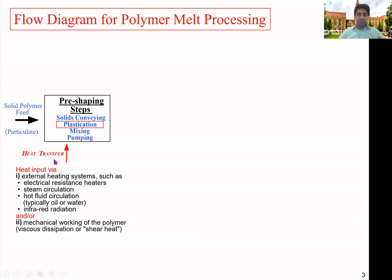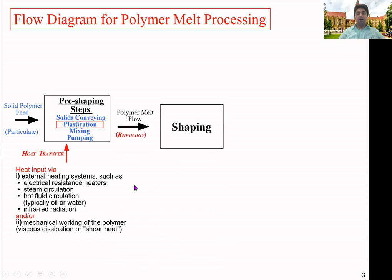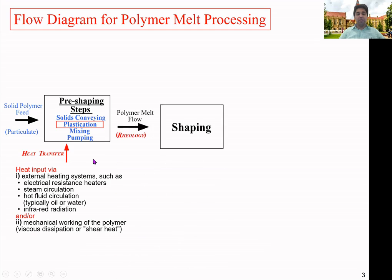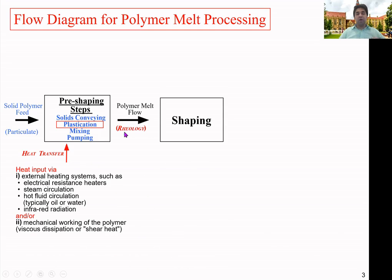Both external heat and internal heat generation from viscous dissipation and friction depend on the material type and the geometry and surfaces of the processing machine. In the pre-shaping step, heat transfer is the most important aspect. After melting, we also need to look at the rheology of the polymer — the Newtonian and non-Newtonian behavior — since the polymer is now in the molten state.